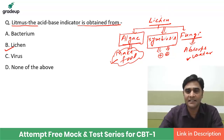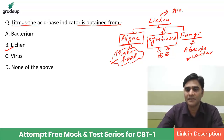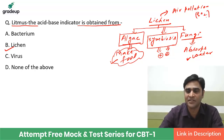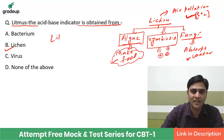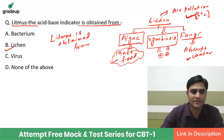Lichen is the indicator of air pollution, especially SO2 — sulfur dioxide pollution. So if the question is which of the following indicates sulfur dioxide level in air, your answer should be lichen. And litmus is obtained from lichen. This is important.